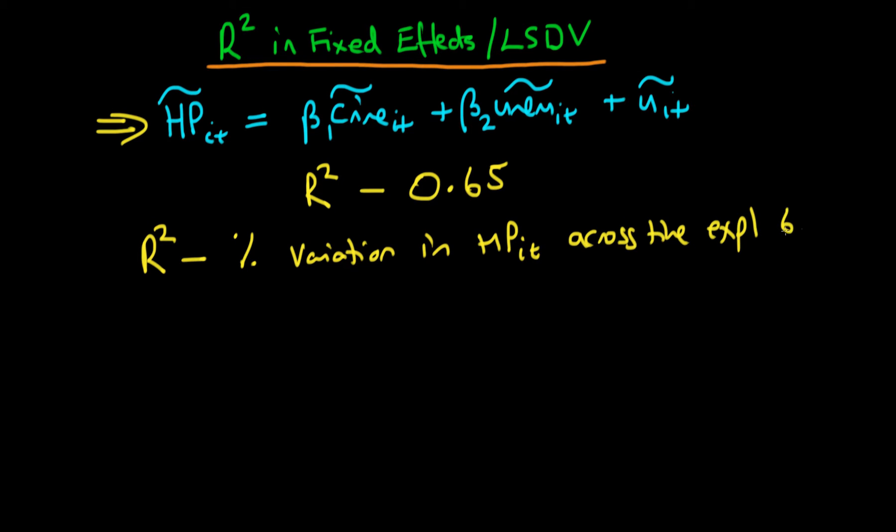So in this circumstance what we're actually doing is we're saying how well can our model explain deviations in house price away from their time mean. So that's HPi bar.